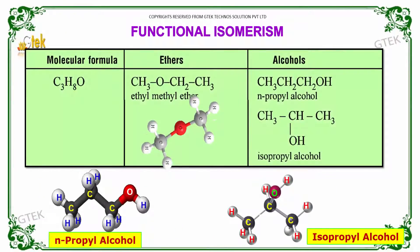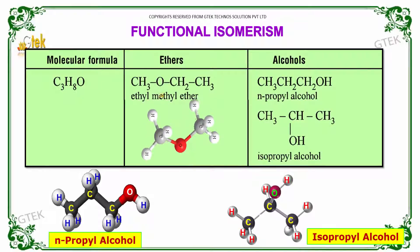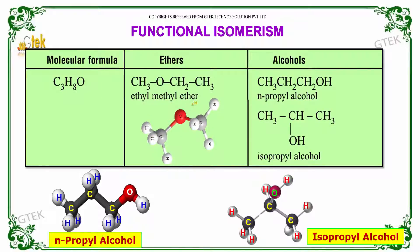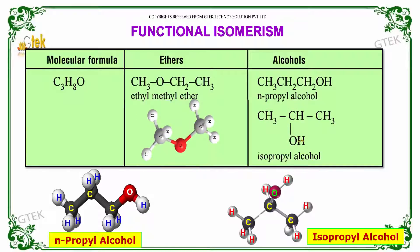Functional isomerism. For the molecular formula C3H8O, ethers are represented by ethyl methyl ether, and alcohols as n-propyl alcohol or isopropyl alcohol.